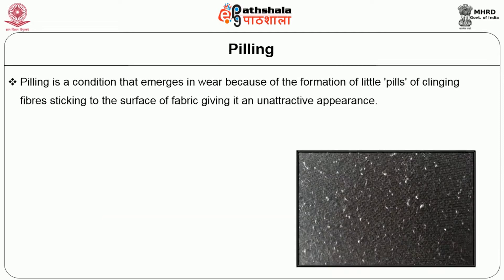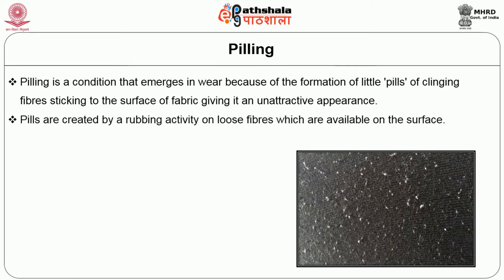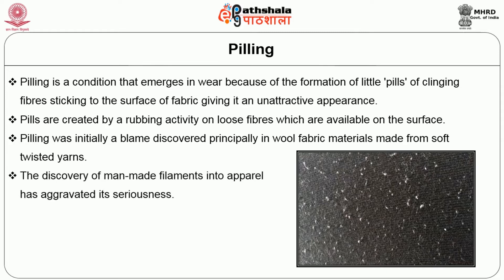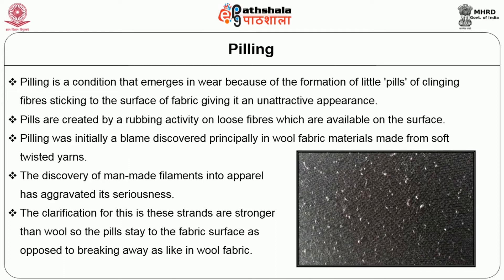Pilling is a condition that emerges in wear because of the formation of little pills of clinging fibres sticking to the surface of the fabric, giving it an unattractive appearance. Pills are created by a rubbing action on loose fibers available on the surface of the fabric. Pilling was initially a problem found principally in wool fabrics, but later fabrics made from soft twisted yarns also have the same risk. The discovery of man-made filaments in apparel has aggravated its seriousness, as these strands are stronger than wool so the pill stays on the fabric surface rather than breaking away like in wool fabric.